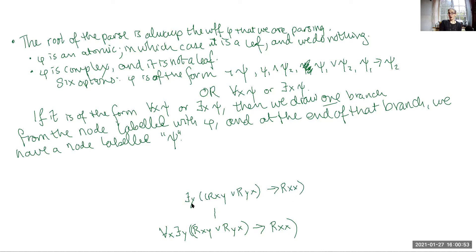Now this existential quantifier is our next connective. So again, we have just one branch. Let's see if I can draw my branches small enough to fit everything. And we have r x y, or r y x implies r x x.